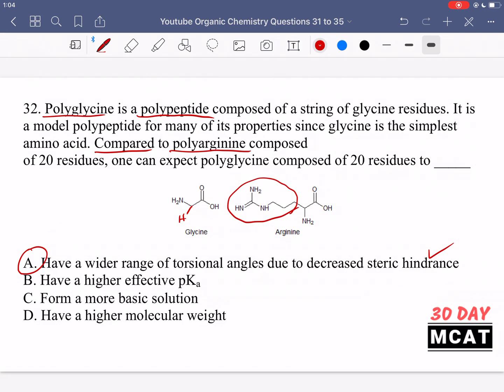B is saying polyglycine will have a higher effective pKa. That's incorrect because pKa is high if you have a basic residue and arginine is basic whereas glycine is not. C, it will form a more basic solution, is the same thing as B and incorrect. D says it will have a higher molecular weight. That's incorrect. We have one small H group as our side chain and arginine has more carbons with different hydrogens and nitrogens, so it's definitely going to have a higher molecular weight.